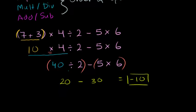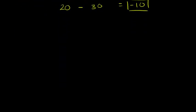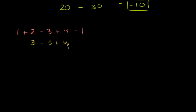I want to make something very clear: if you have things at the same level — for example, 1 plus 2 minus 3 plus 4 minus 1, where addition and subtraction are all at the same level — you go left to right. So 1 plus 2 is 3, then 3 minus 3 is 0, then 0 plus 4 is 4, then 4 minus 1 is 3. You just go left to right.